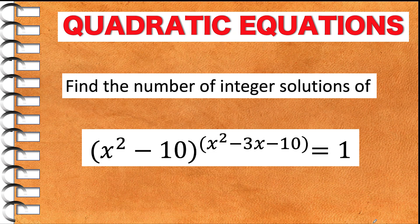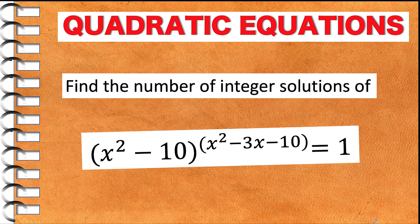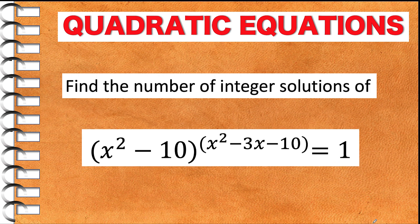Hey everyone, here's our math problem for today. Find the number of integer solutions of the quantity x squared minus 10, raised to the quantity x squared minus 3x minus 10, equals 1. You can pause the video and see if you can solve this challenging quadratic equation.